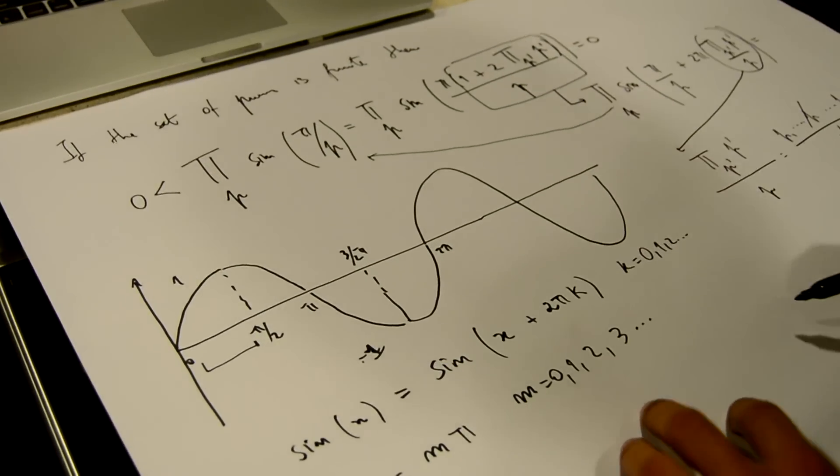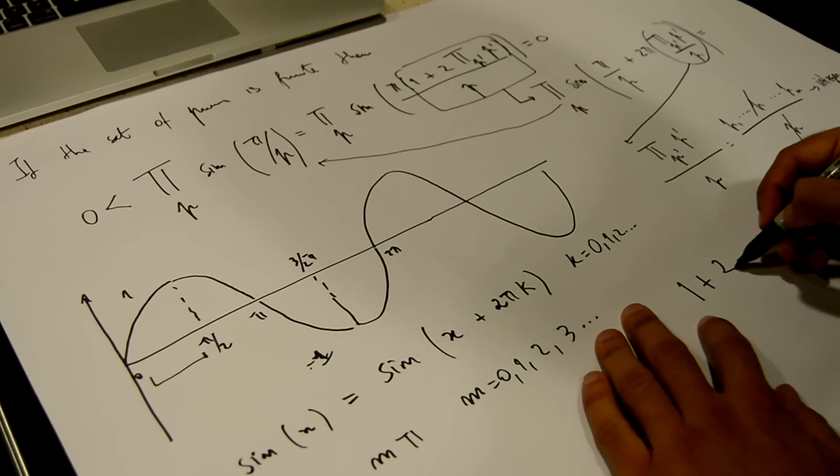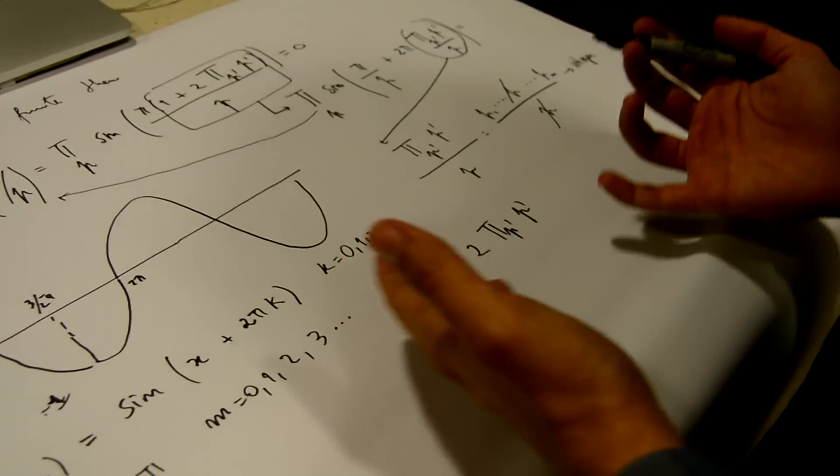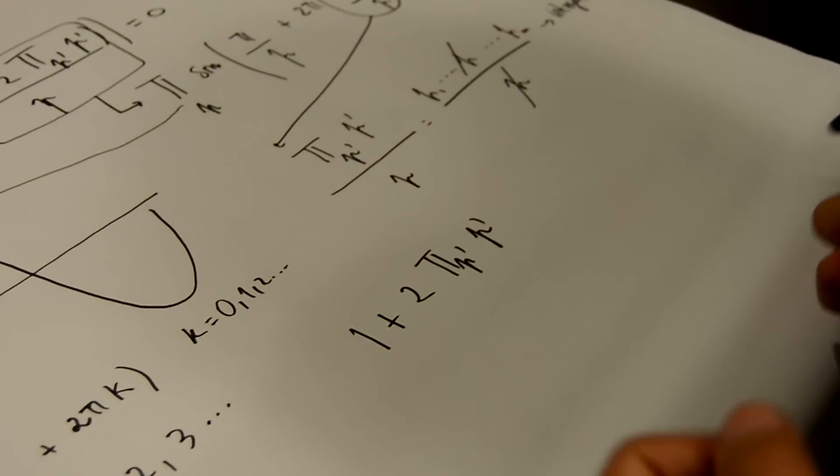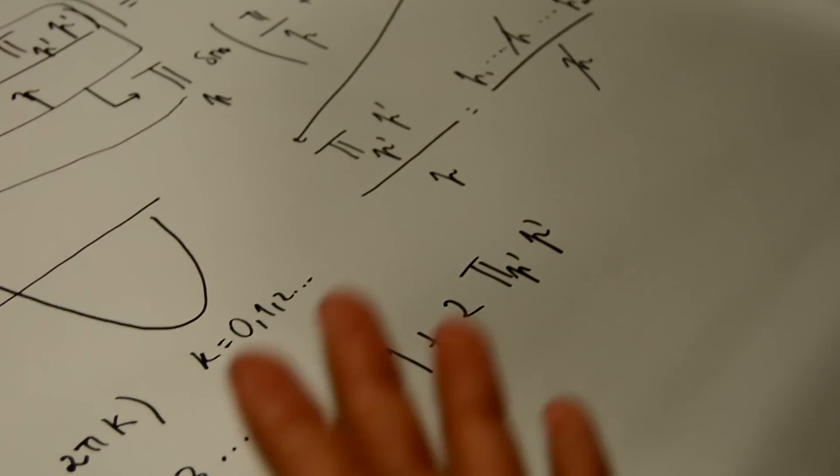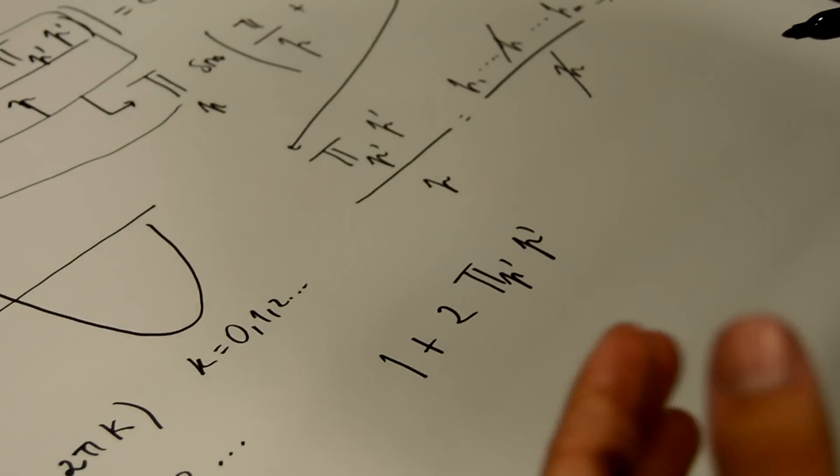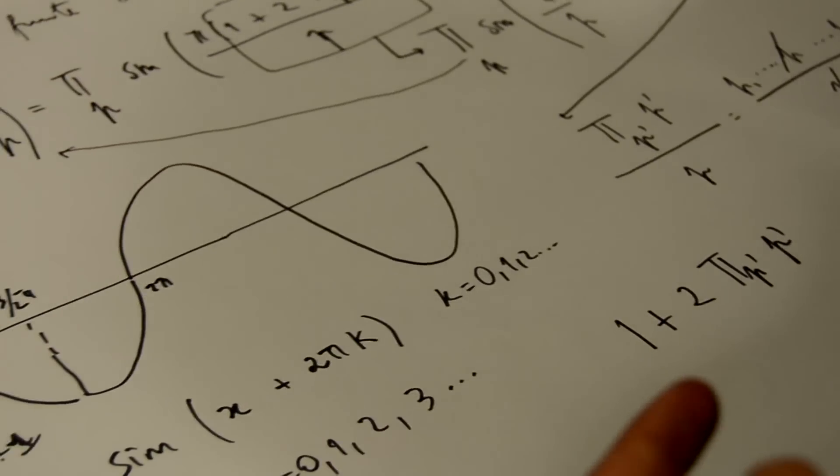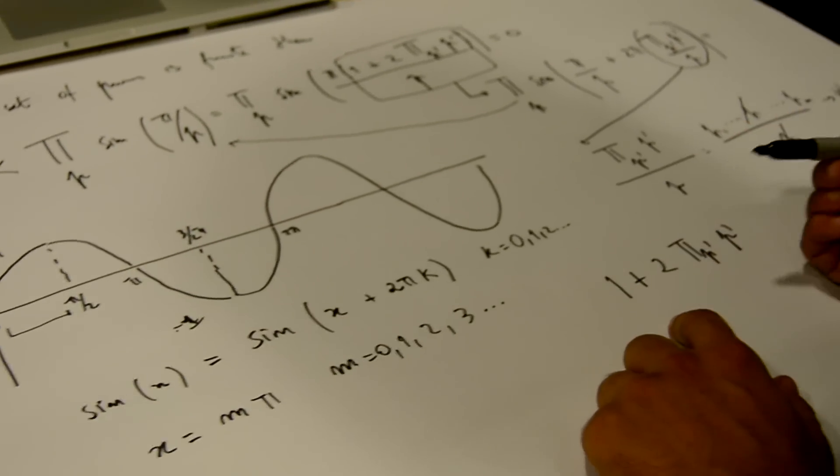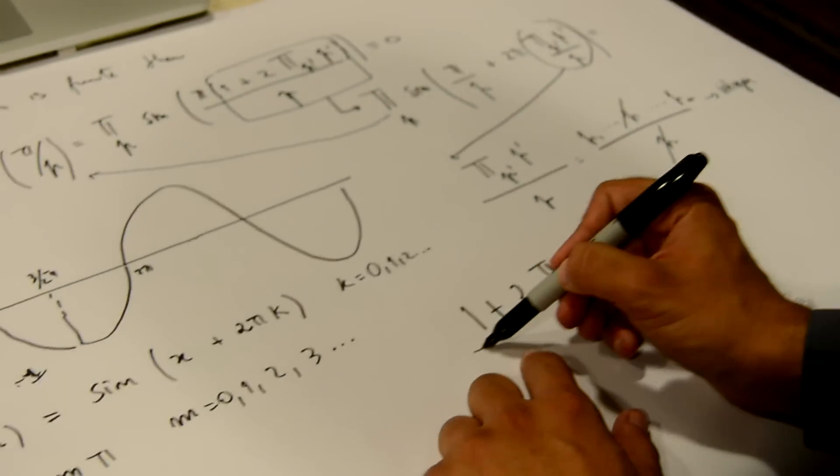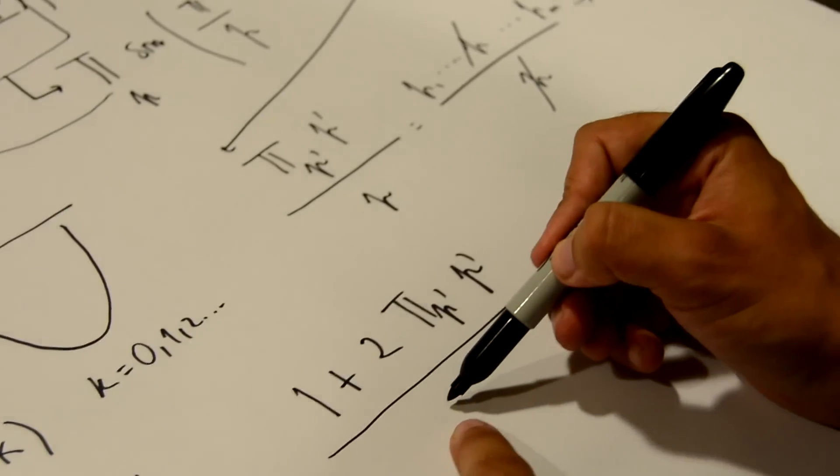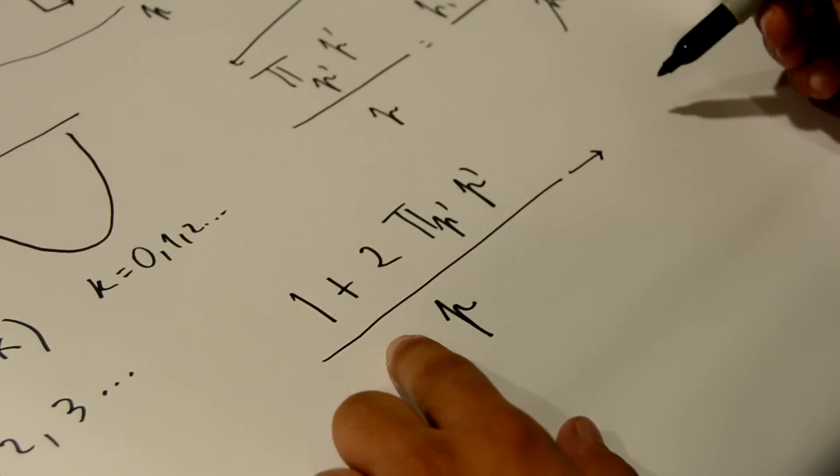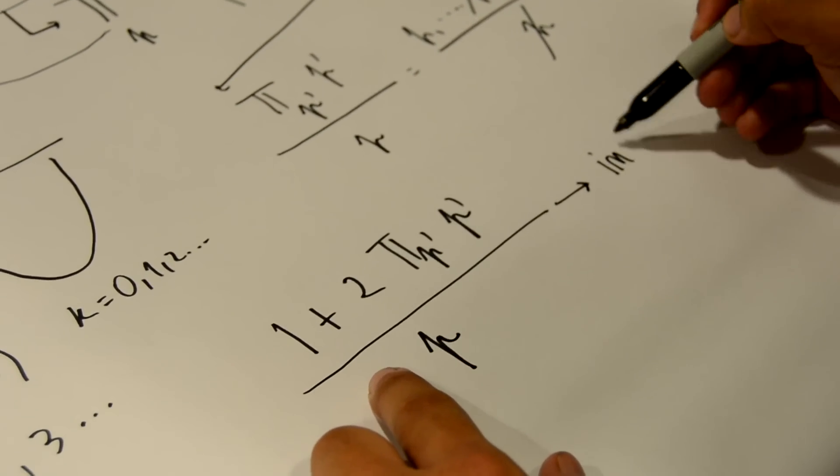If we take a look at this number, 1 + 2∏p, this is just a regular integer. In particular, since all integers can be decomposed into prime factors, there is at least one prime, p, that divides this number here. Which means that if we take that prime number that divides this integer, this result here is going to be an integer.